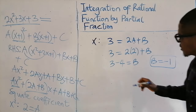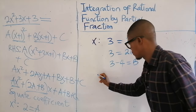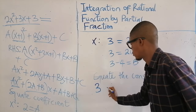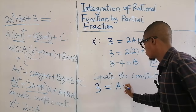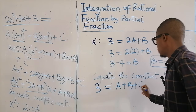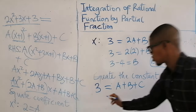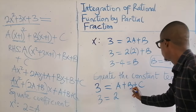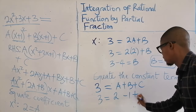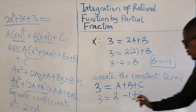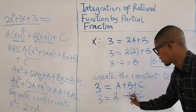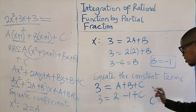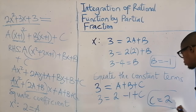Now equating the constant terms: on the left that's 3, on the right that's A + B + C. So 3 equals 2 plus (minus 1) plus C, which gives 3 equals 1 plus C, so C equals 3 minus 1, which is 2.